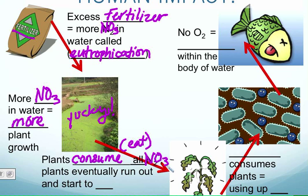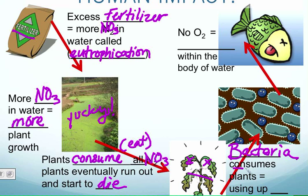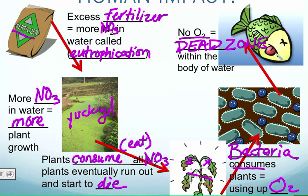Eventually, as those plants eat up all the nitrates, they run out of food and start to die. As the plants die, our bacteria friends come in — this time consuming the dead plants, but in doing so they take up all the precious oxygen found in the water environment, the lake or stream. When we run out of that oxygen, we end up with a dead zone. Human impact is something we have to think about, and that's one of the reasons why we visited the Vermilion River — to see whether we play a role in impacting the health of the river.